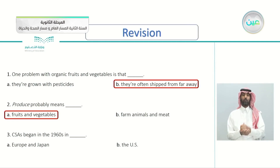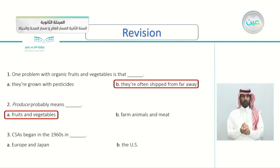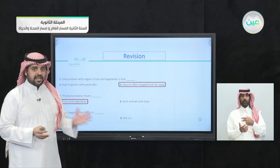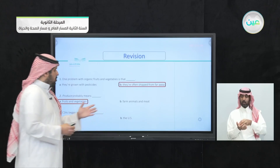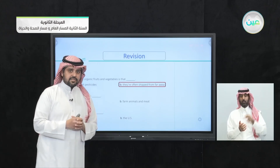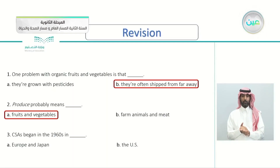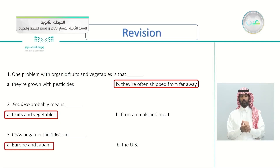Question three: CSAs began in the 1960s in A, Europe and Japan, or B, the US. Where did CSAs begin? Let's check the correct answer — that's correct, A, in Europe and Japan.